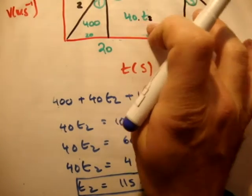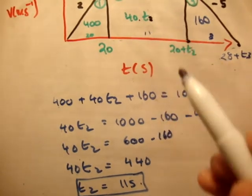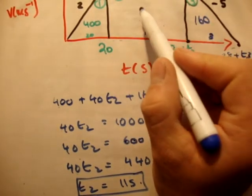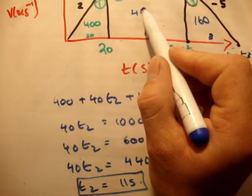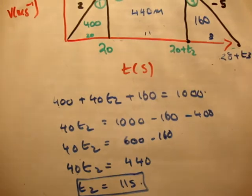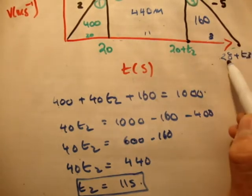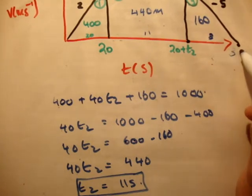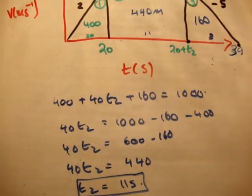That means that this region here, that's 11 seconds. That means the total area is 40 times 11, so that's 440 meters. Now, this time here is 28 plus t3, so that's 39 seconds.